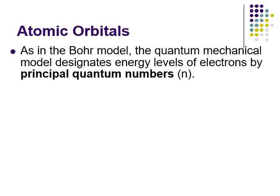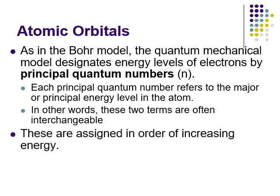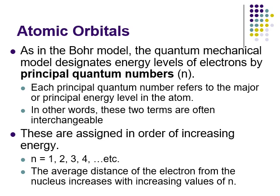We still use energy levels, and we call them the principal quantum number — they're really the same thing. The first energy level has a principal quantum number of 1, the second has a principal quantum number of 2, and so on. These are assigned in order of increasing energy and increasing distance from the nucleus. They're always whole numbers because there's no in-between, and as we get to higher energy levels we get farther and farther from the nucleus.